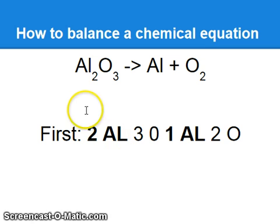First of all, let's lay the equation out. Al has 2, O has 3, Al has 1, and then O has 2.